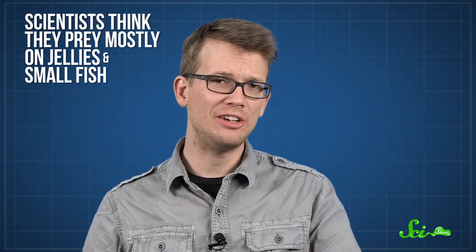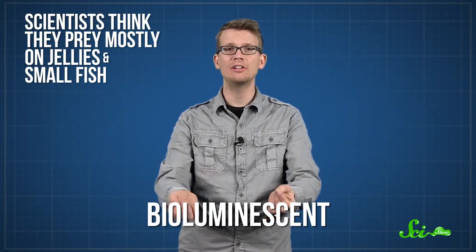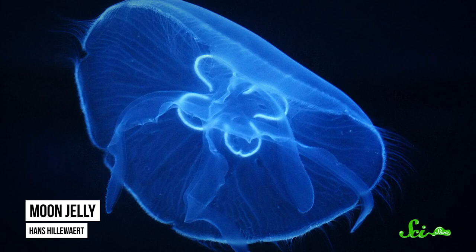and they discovered that its eyes have even more specific adaptations. For one thing, they're green, which the biologists think helps them better see their prey. We don't know all that much about what these guys eat, but scientists think they prey mostly on jellies and small fish. And jellyfish are often bioluminescent,